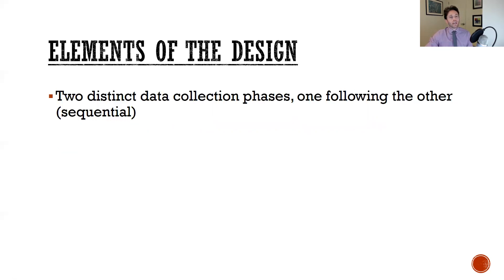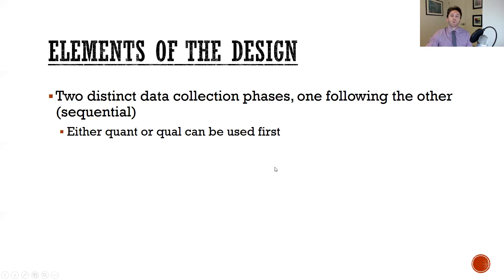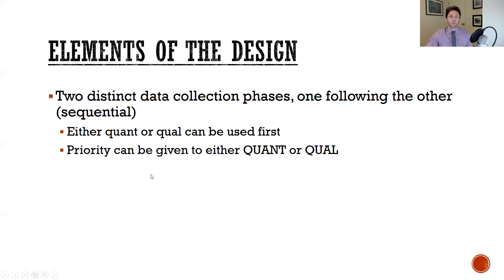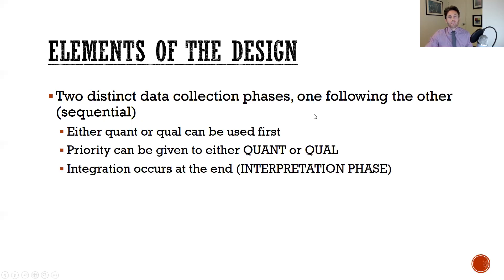The elements of this transformative sequential design are as follows. There are two distinct phases of data collection, one following the other — sequential in nature. Either the quantitative or the qualitative can be used first, and whichever one is used first is going to take priority and is labeled with capital letters — in this case QUANTITATIVE or QUALITATIVE — whatever works for your particular study.